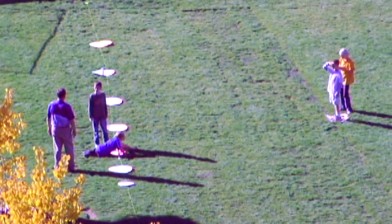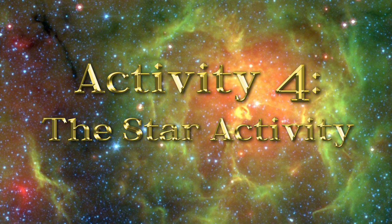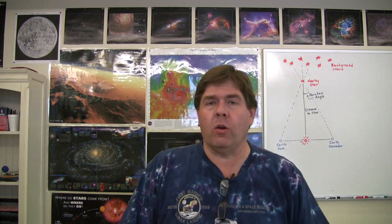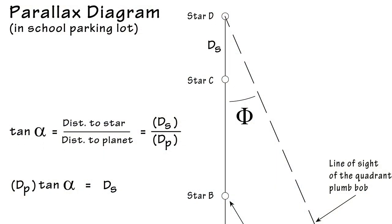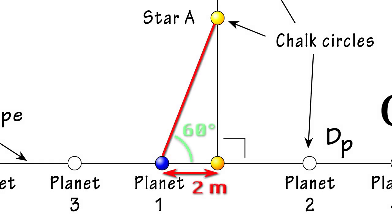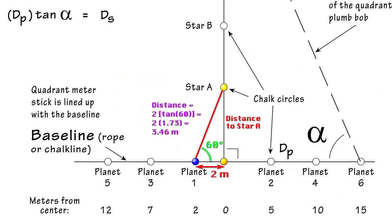Your teacher may have you repeat the process for other planets, so that each planet has been measured by several different teams. Back in the classroom, you will share your measurement for your planet with the other teams, and they will share theirs with you. Your teacher will write them down on the board. Now let's do the calculations. Here's an example: if you are calculating the distance to star A as measured from planet 1, which is 2 meters from the sun, and you found the angle to be 60 degrees, you take the tangent of 60 — which is about 1.73 — and multiply it by 2 meters to get 3.46 meters as the distance to star A.